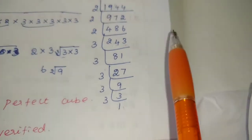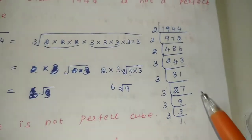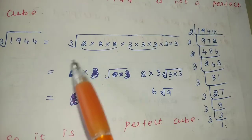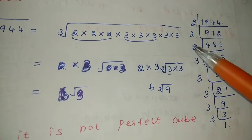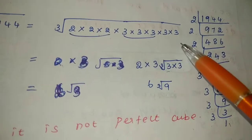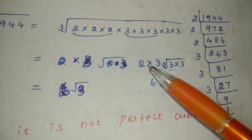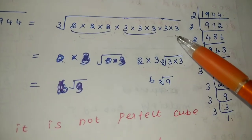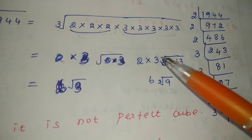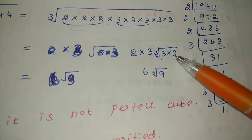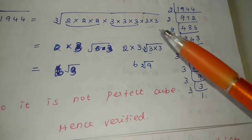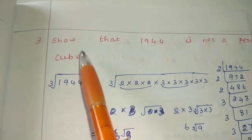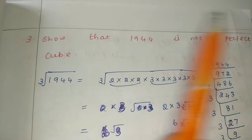Finding the values: cube root of 1944 = cube root of (2³ × 3⁵). We have 2³ grouping of 1, and 3 with value 3 means one group of 3 with balance 3 into 3 — so 3² = 9 is left over. Since there is a remainder, 1944 is not a perfect cube. Hence verified: 1944 is not a perfect cube.